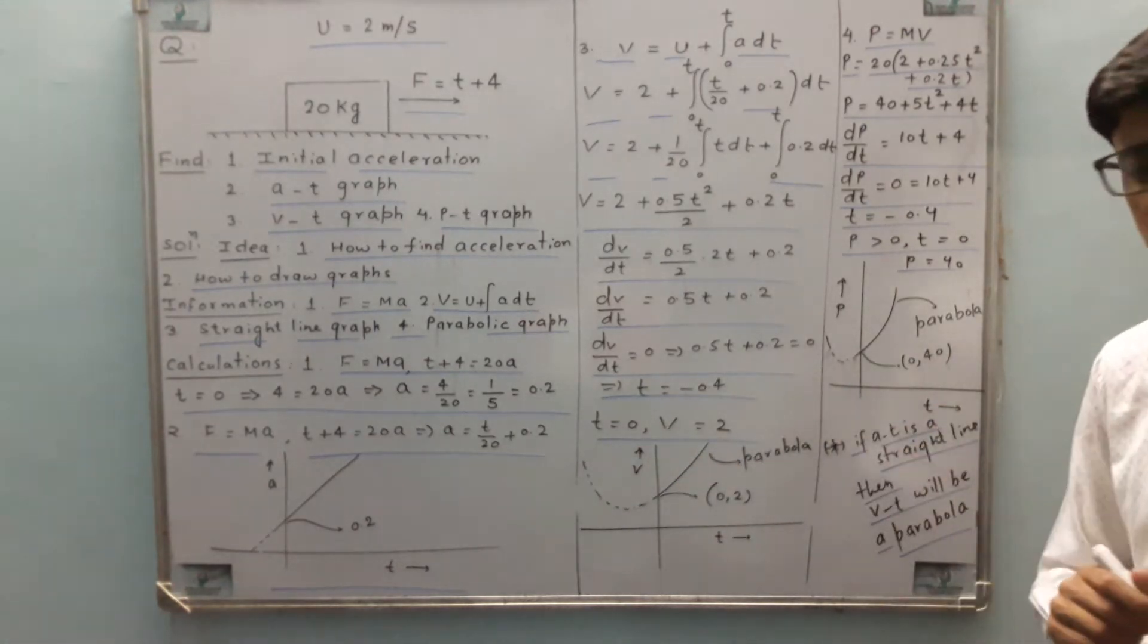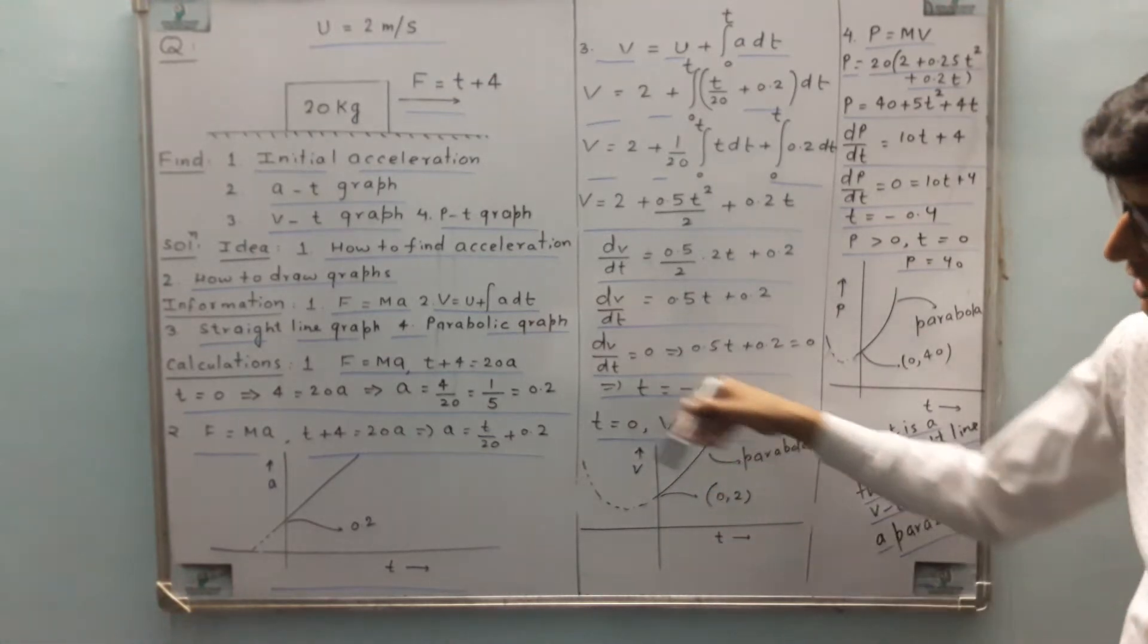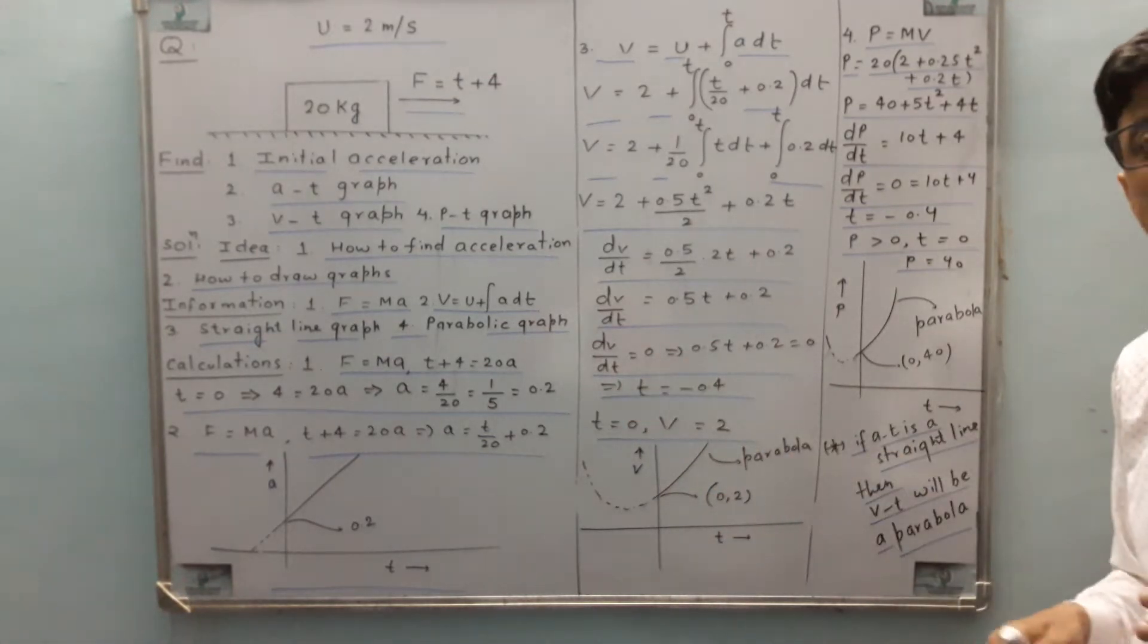So the parabola will be like this. And at t equals 0, v equals 2. So we can draw the graph. Again I have drawn the dotted graph because time is not negative.